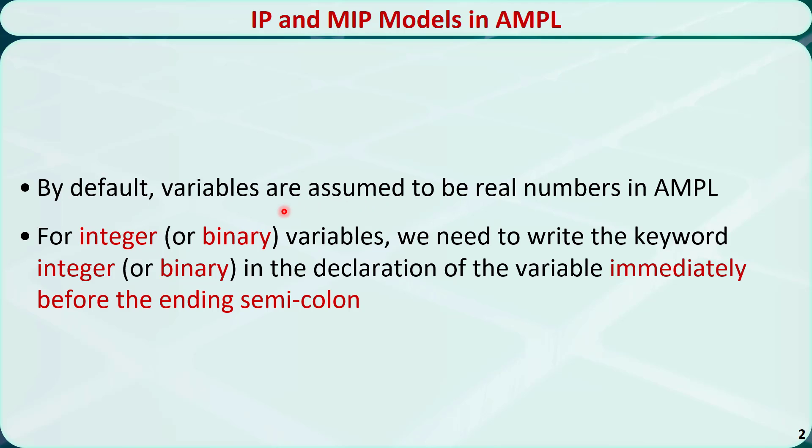By default, variables are assumed to be real numbers in AMPL. In order to restrict a variable to be an integer or binary variable, we need to write the keyword integer or binary in the declaration of the variable immediately before the ending semicolon.